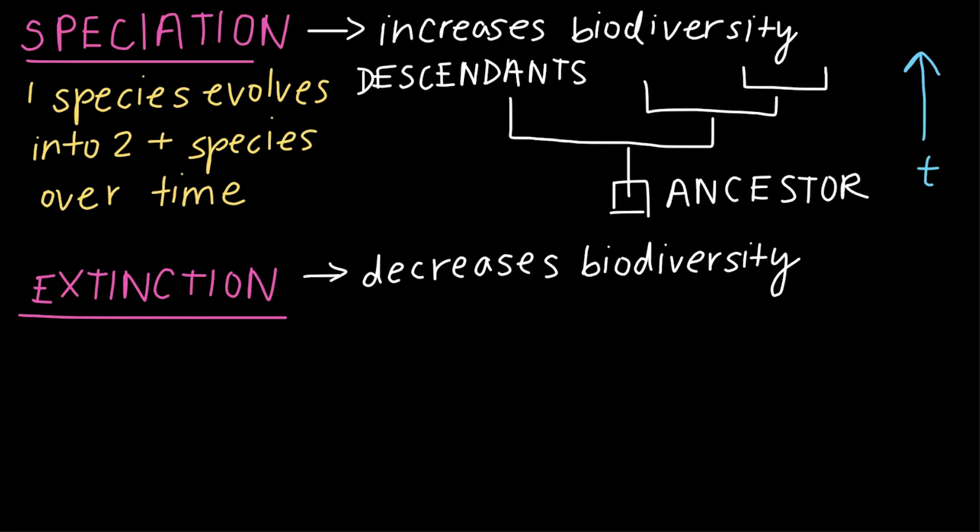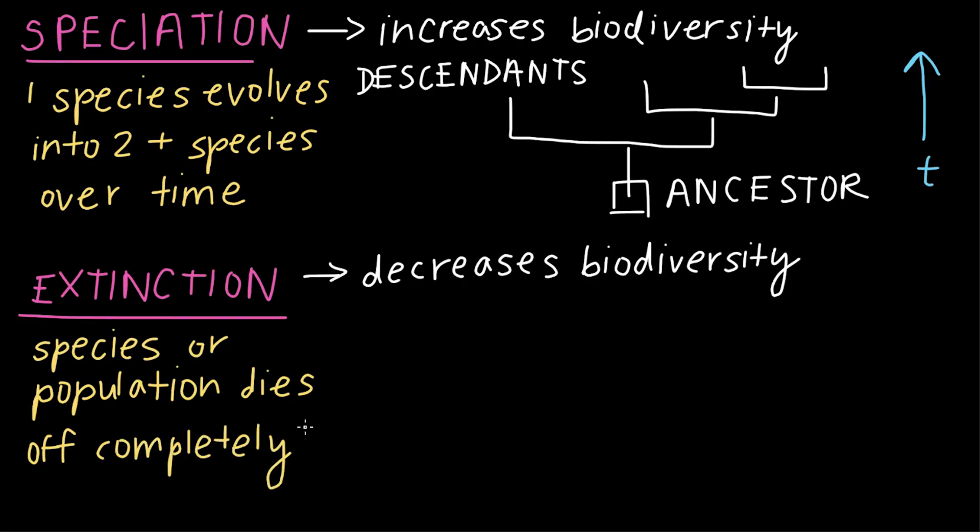And what we mean by this word extinction is that a species or population of living things dies off completely. So notice that it can happen on different levels, too. For example, if a population goes extinct, then we no longer have the genetic variants in the gene pool, or the set of genes for a particular species. But if a species went extinct entirely, then that species is no longer there to fulfill its unique role, or its ecological niche.